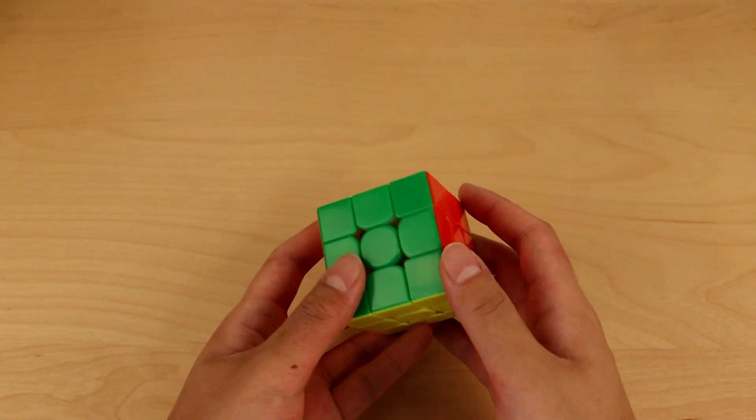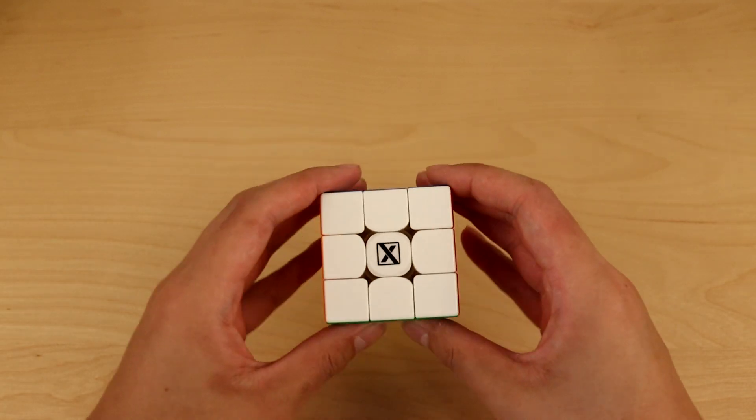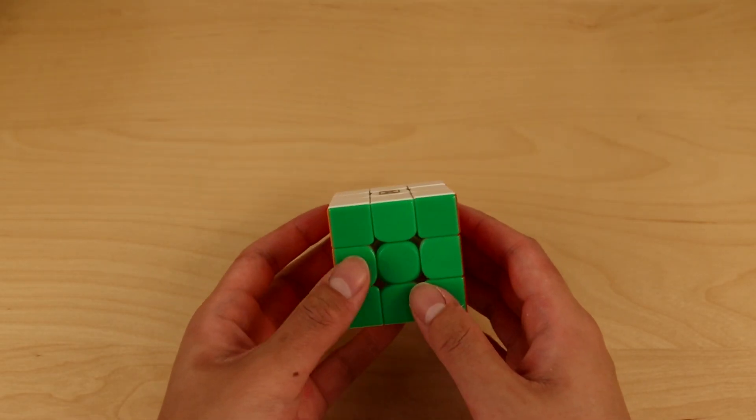Yes, the PLL skip was pretty lucky, and the double X-cross was also pretty lucky. However, there was a lot of skill and planning that went through this solve, which shows how great of a solver Max Park is.